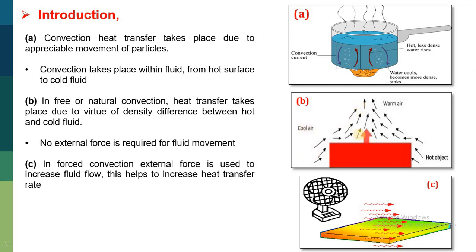This process may take longer time because there is no external force working in the system. In case of forced convection, an external force is required or used to increase the fluid flow, which helps to increase the heat transfer rate. In this diagram, you can see a hot plate is kept in front of a fan. This will increase the rate of flow of air over the plate, so the heat transfer rate increases. In case of forced convection, heat transfer rate is more than free or natural convection.